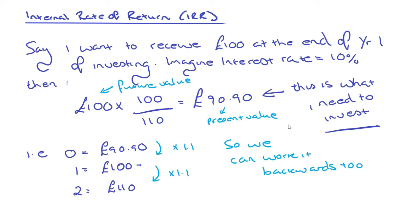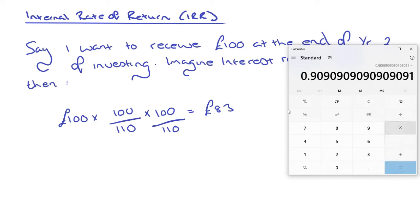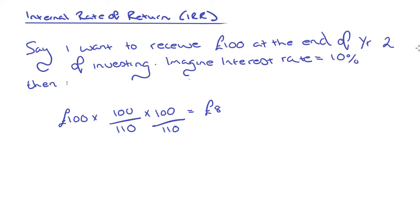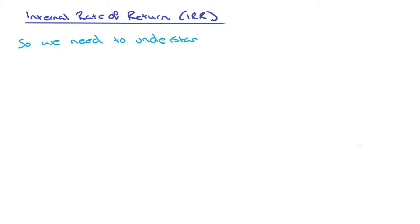If I wanted to achieve £100 at the end of year two of investing and the interest rate was 10%, I would take £100 times by 100 divided by 110, times by 100 divided by 110, which would get me to £82.64. That would be the present value I need to invest today to achieve £100 in two years' time. Another way of looking at that is £100 times by 100 divided by 110 squared. At year zero I'm investing £82.64, at the end of year one I'd achieve £90.90, and at the end of year two I would achieve my £100. This is why it's important to understand discounted cash flow before you move on to IRR, because IRR develops on the concept of discounted cash flows further.